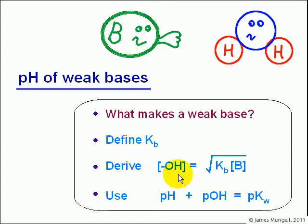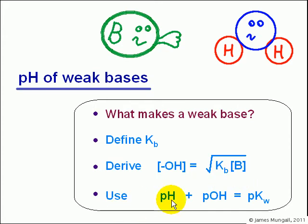But this time the OH minus concentration is equal to the square root of Kb times the base concentration. Then we're going to use pH plus pOH equals 14 — or pKw — to actually work out the final pH.